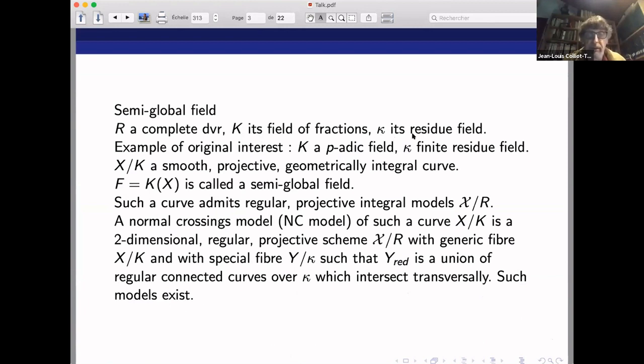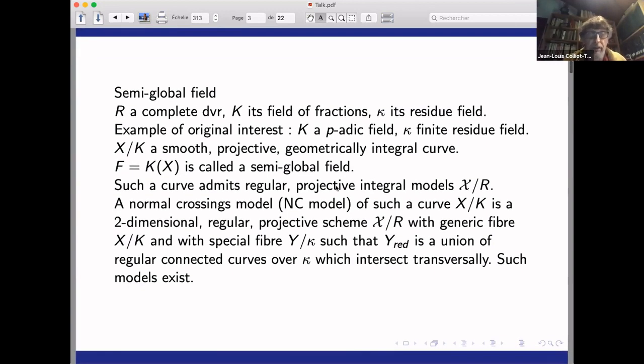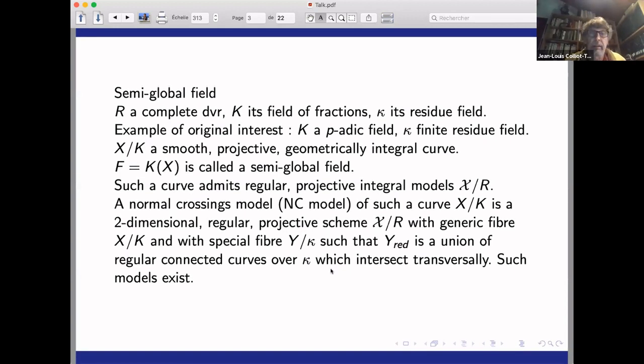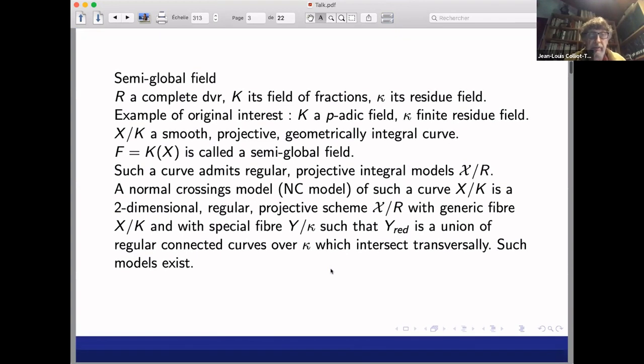You start with a complete discrete valuation ring. The field of fractions is capital K, and kappa is the residue field. The original example of interest is the case of a p-adic field. And then, we consider a smooth projective geometrically integral curve over the field K, and the function field of such a curve is called a semi-global field. It's global in the direction of the curve, it's local in the direction of the field. Such a curve has a regular projective integral model, and we call such a model a normal crossing model.